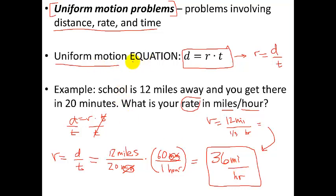So that's an example of a uniform motion problem. Distance, rate, and time. And just making sure that your units are proper. Distance is in miles. Time here is in hours. We had to convert it.